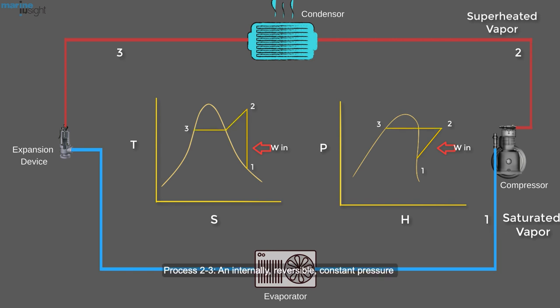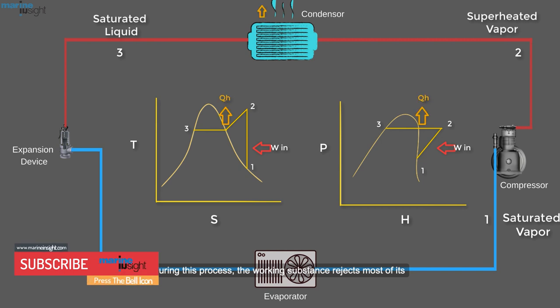Process 2-3: An internally reversible constant pressure heat rejection inside the condenser, in which the working substance is de-superheated and then condensed to a saturated liquid at 3. During this process, the working substance rejects most of its energy to the condenser cooling water.